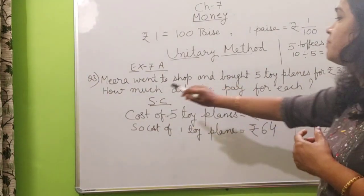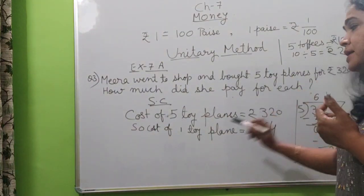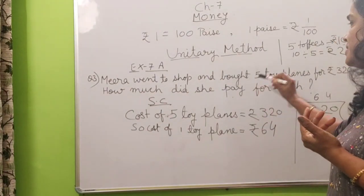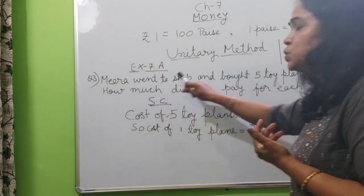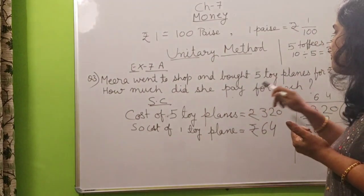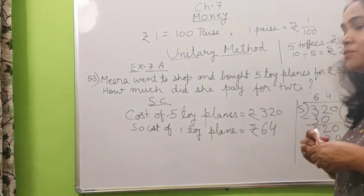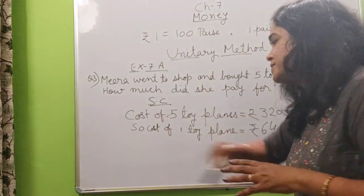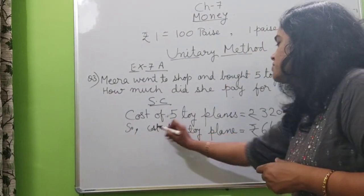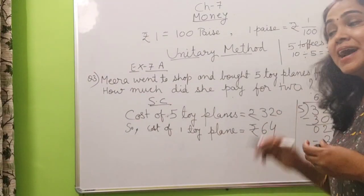Now if in place of 1, if 3 is there, 4 is there, if you know the price of 1, you can find the price of more also. So whenever such type of question is there that Meera went to shop and bought 5 toy planes for rupees 320, how much did she pay for, in place of each, if 2 is there? Then what will you do? You will same way first find cost of 1 toy plane.